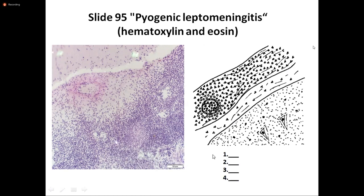Number 4 — brain tissue edema. This is brain tissue, and these are neurons. Brain edema is seen here. To summarize picture 49: number 1 — leptomeningeal neutrophil infiltration; number 2 — tissue lysis; number 3 — exudate in the subarachnoid space; number 4 — brain edema.